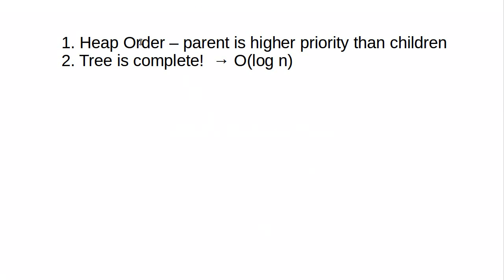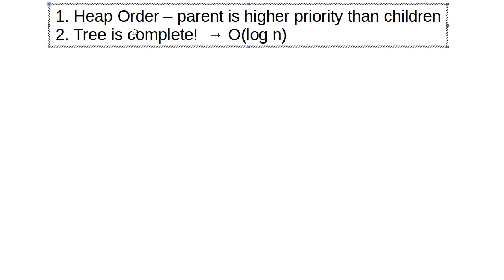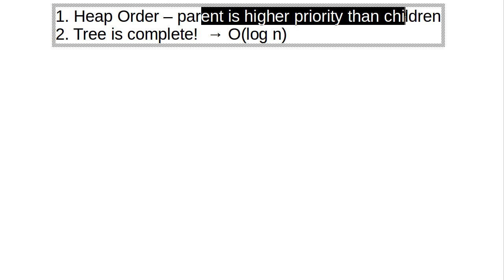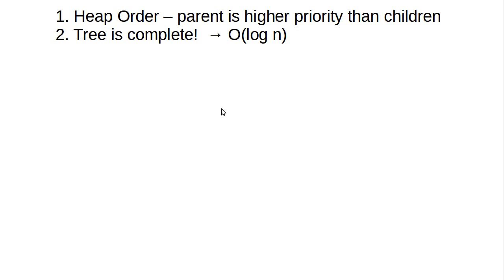So in the last video, we said that the two rules of binary heaps were that as a binary tree, they have heap ordering, so the parent is higher priority than the children, and that the tree has to be complete, which means that we fill in each level of the tree from left to right until it's complete before we move to the next line.